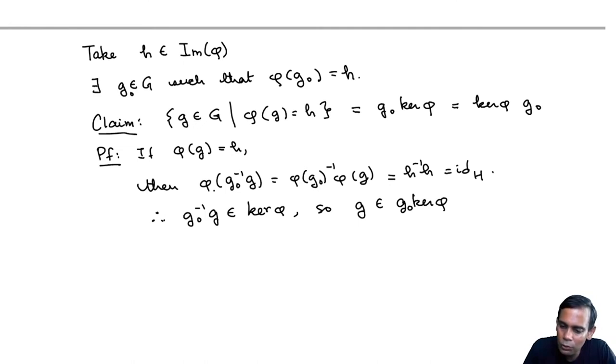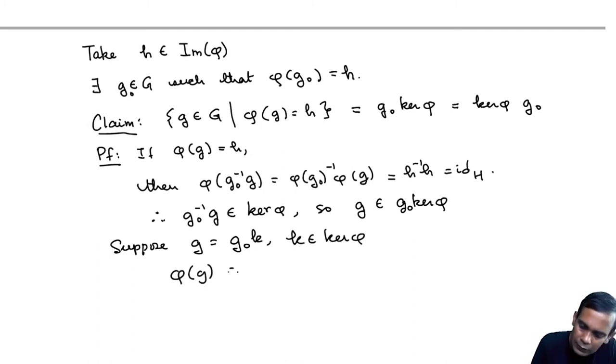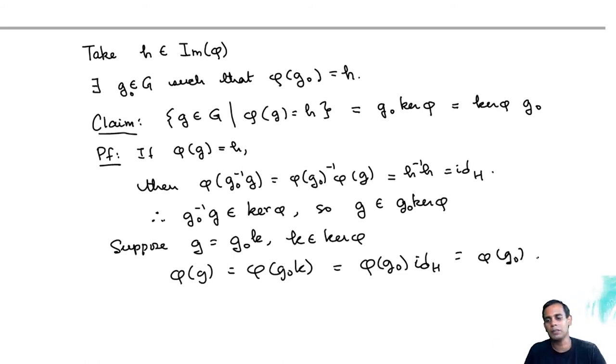And to go the other way, suppose G is equal to G0 times K where K belongs to kernel of phi. Then phi of G is phi of G0 K, which is phi G0. What is phi of K? Well, phi of K is 1, identity of H. So that's just phi G0. This is pretty straightforward.